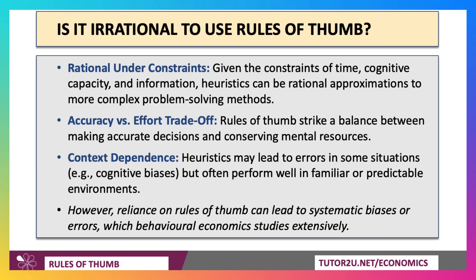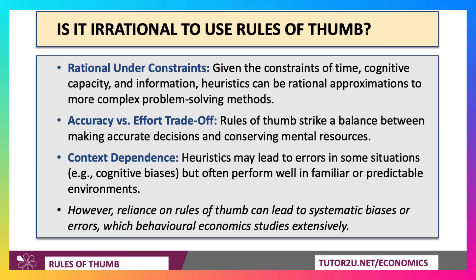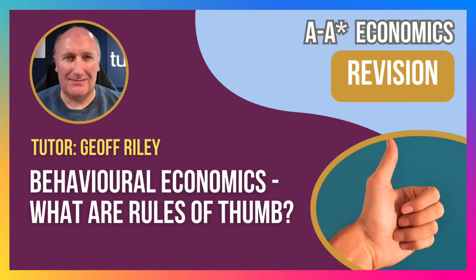However, and this is the key point for your exams: if people over-rely on rules of thumb in their day-to-day behaviour, that can lead to systematic biases or errors. Behavioural economics is all about those cognitive biases which can lead to sub-optimal outcomes. So if you're studying behavioural economics, just make sure you have a few notes and a few examples of heuristics, otherwise known as rules of thumb. Thanks for joining in.